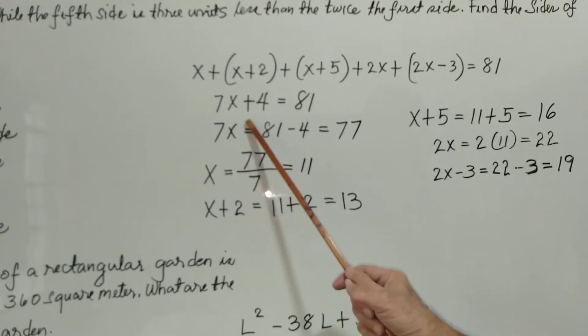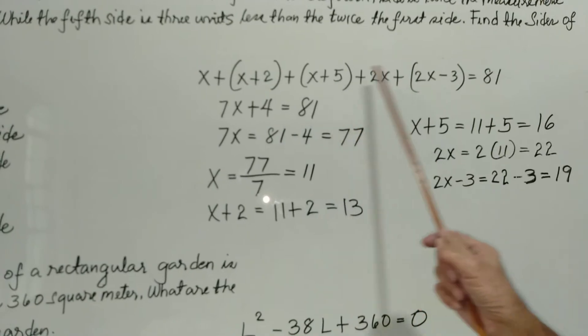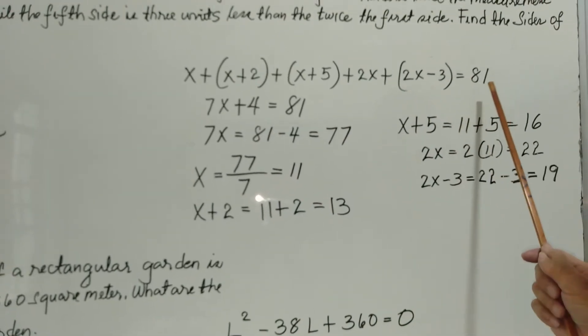And the constant is 2. It's probably 7 minus 2 is 4. And the sum is 81.